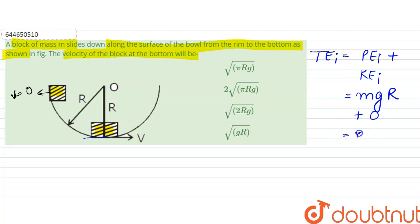Since the velocity is zero, this is zero. So the initial one is mg r. Now total energy finally would be equal to potential energy finally plus kinetic energy finally.